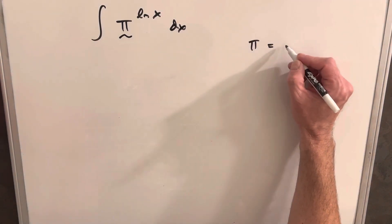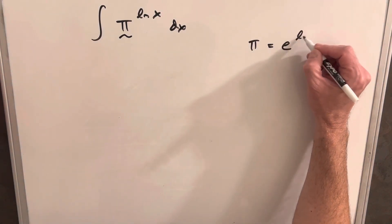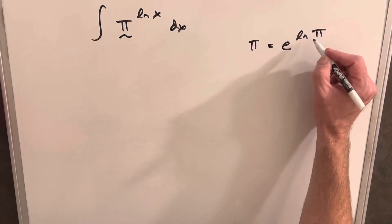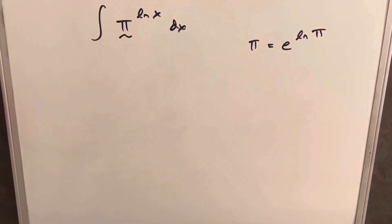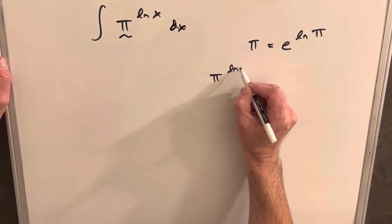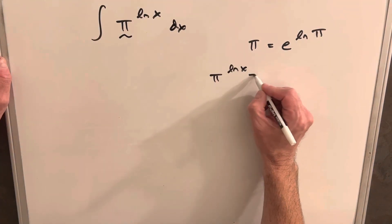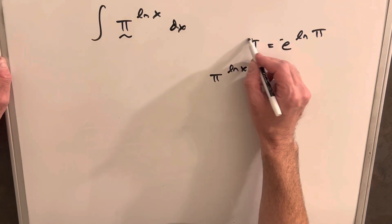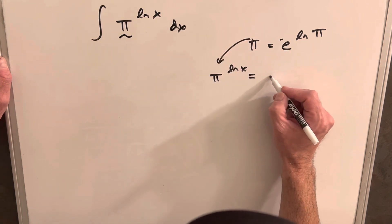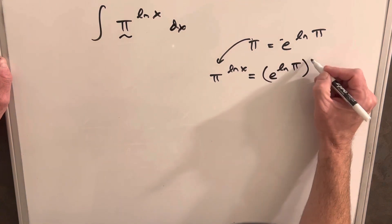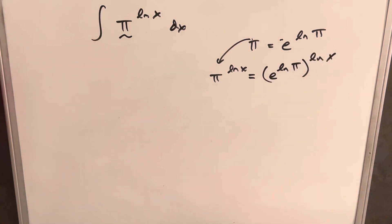We can write π as e to the ln π, because e and ln cancel each other out — this is the same thing. Then what that's going to do is allow us to make a substitution: we're going to have e^(ln π) to the ln x.